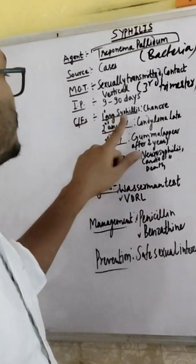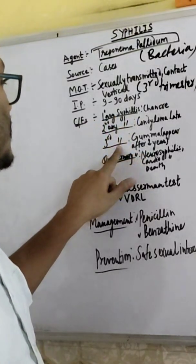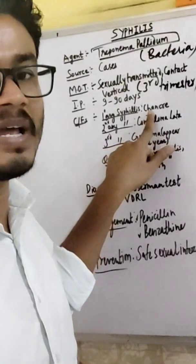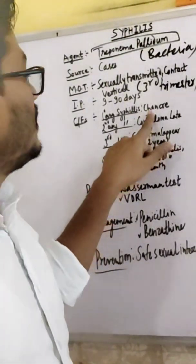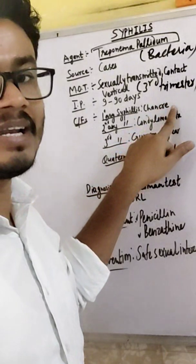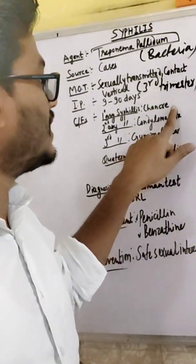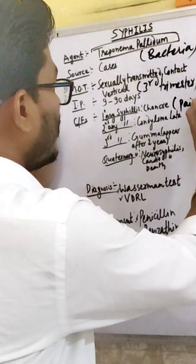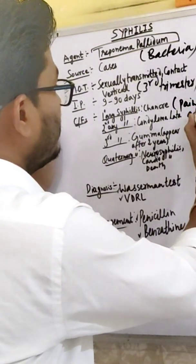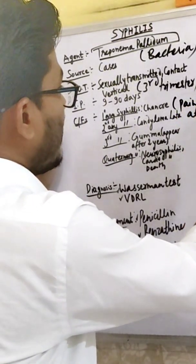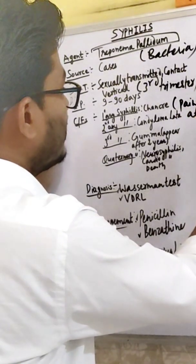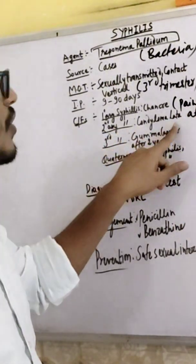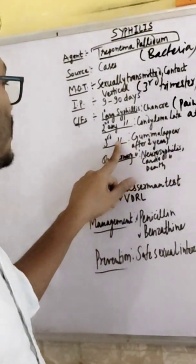The clinical features include primary syphilis, secondary syphilis, latent syphilis, and tertiary syphilis. Primary syphilis presents as a painless ulcer in the genitalia, appearing at around three weeks. Secondary syphilis presents with condyloma lata and rash.